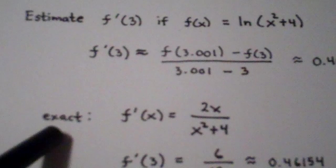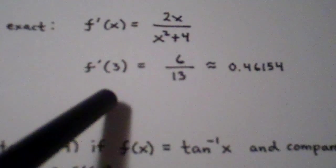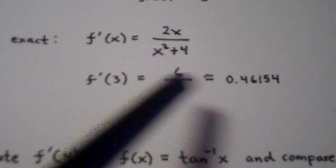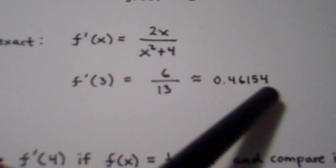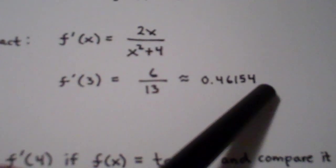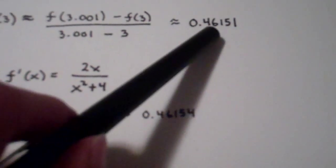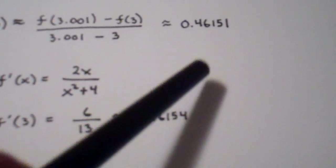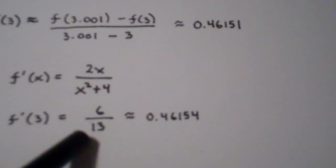So if I want to calculate the exact value of the derivative, I just simply evaluate f'(3), which is going to be 6/13, which is—I think I went out to like 5 decimal places—0.46154. So you have to go out to like the 5th decimal place here to actually see a difference between the estimation and the exact value. So they're pretty close.